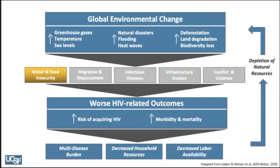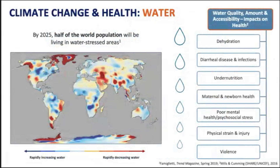Starting with water and food insecurity: climate change is a very important driver of water and food insecurity worldwide, and there's a growing body of literature showing that water and food insecurity worsen HIV acquisition risk as well as health outcomes. Currently one in three people globally lack access to safe drinking water, and over half of the world's population does not have access to safe sanitation. Climate change is exacerbating this — deeper blue spots represent regions with rapidly increasing amounts of water, and deeper red spots represent regions with rapidly decreasing amounts, both causing water insecurity and major threats to human health.